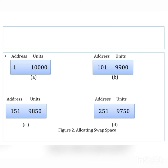Process three requests 100 units. The starting address from the previous diagram is 151, so we increment it by 100 — the new address becomes 251. We reduce the available units by 100, giving 9,750 units. The final map entry has starting address 251 with 9,750 available units — that is the allocating swap space example.